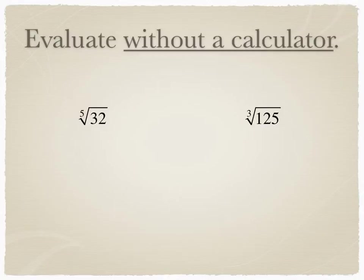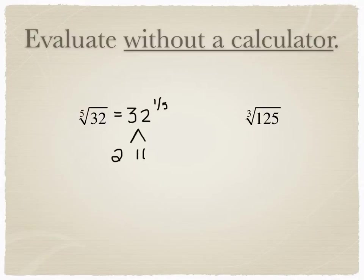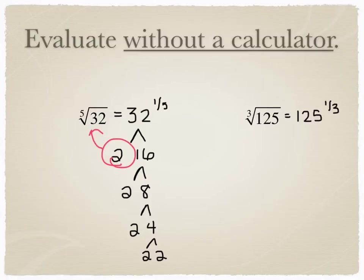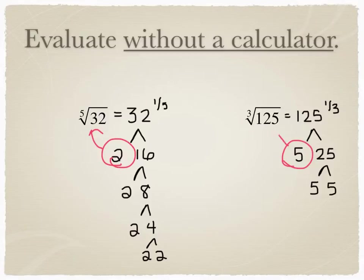Suppose I actually wanted you to find the fifth root of 32. You already know how to do this, because the fifth root of 32 is really just 32 to the power of one fifth. From last chapter, that means break 32 down into five factors: 2 and 8, 2 and 4, 2 and 2. So 32 to the one fifth equals 2, which is the same thing as the fifth root of 32. Same thing: the cube root of 125 would be 125 to the one third power. Break that up into three pieces — 5 and 25, 5 and 5 — so the cube root of 125 is just equal to 5. This is the exact same stuff as what we did in the last chapter, just a different way of writing it — a new notation to get used to.